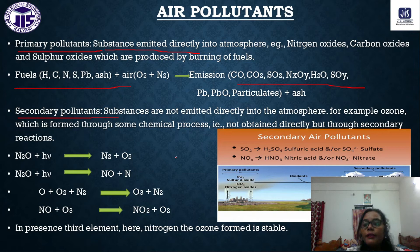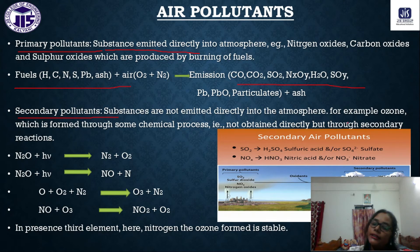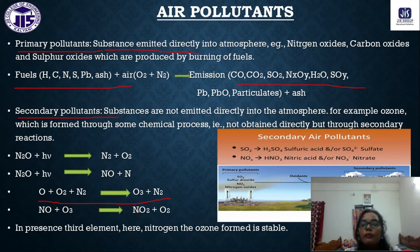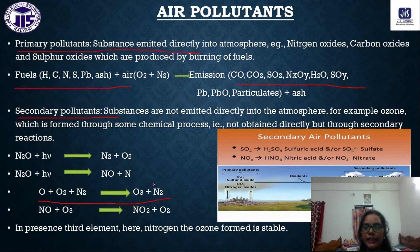Secondary pollutants are not naturally present in the environment but are created by our activities, further polluting the environment. For example, ozone is important in the stratosphere, but in the troposphere, due to human activity, ozone is created and becomes harmful — making it a secondary pollutant. Other secondary pollutants include PAN and sulfuric acid, all created by human activity.